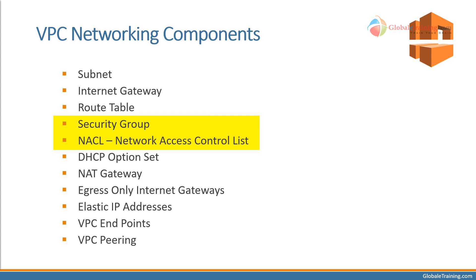The security group and NACL pretty much provide you the functionality of a firewall. They will have some rules in place and they will review every packet — every packet that is coming in is subjected to the rules and restrictions in security group and NACL. We will talk more about where the security groups are applied and also the NACL when we discuss practically while we are doing this and building VPC.